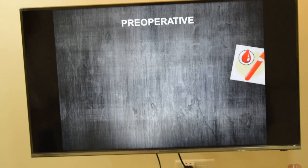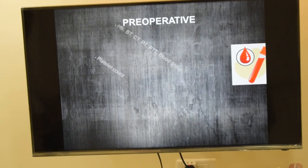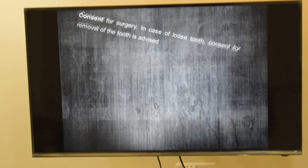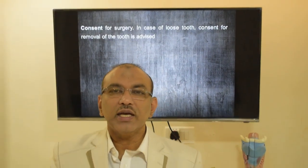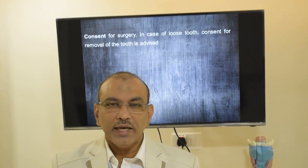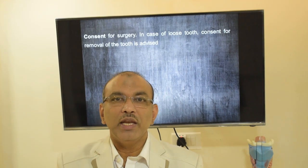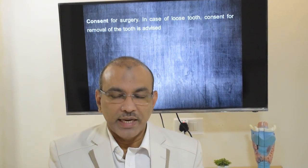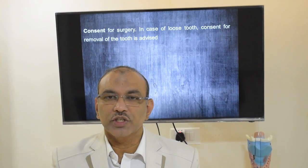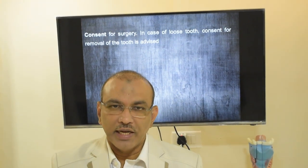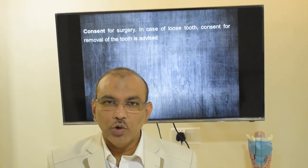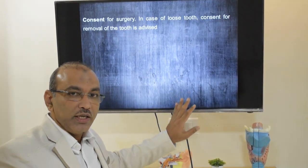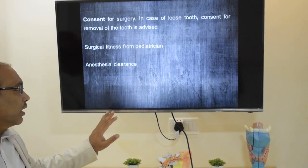For preoperative workup, simple blood tests and X-rays are needed as requested by the anesthetist or pediatrician. Once surgery is decided, consent from the parents is required. The blood test report is ready within about an hour; with the report and X-ray, the child is taken to a pediatrician for surgical fitness clearance, and then to the anesthetist to confirm fitness for anesthesia.